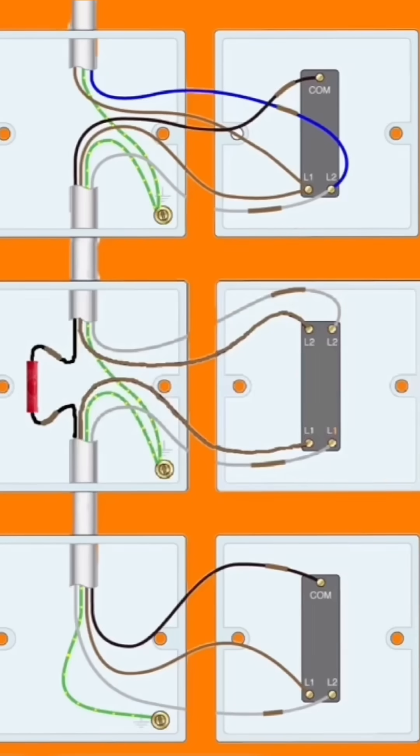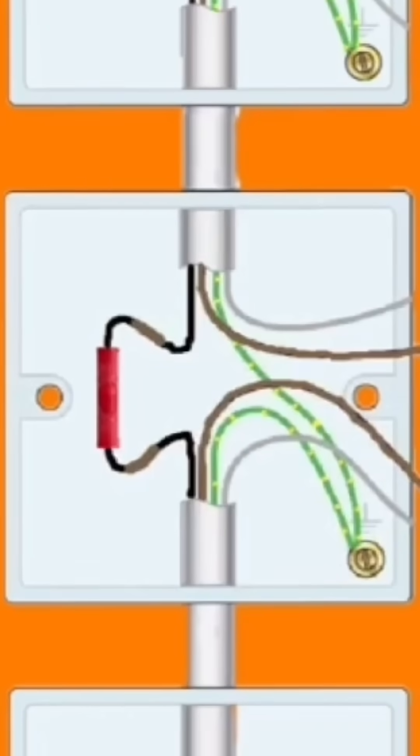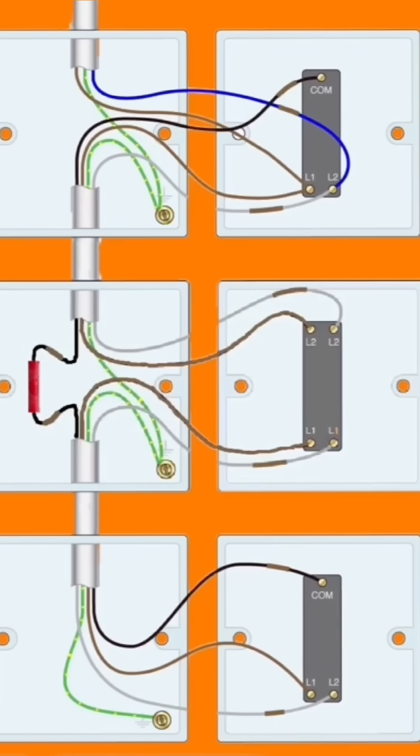The common is not physically connected into a termination within the switch itself. It is actually joined together. In other words, the black common from the top switch and the black common from the bottom switch are connected together and left in the back of the box of the intermediate switch. I've shown a red through crimp for the connection here.